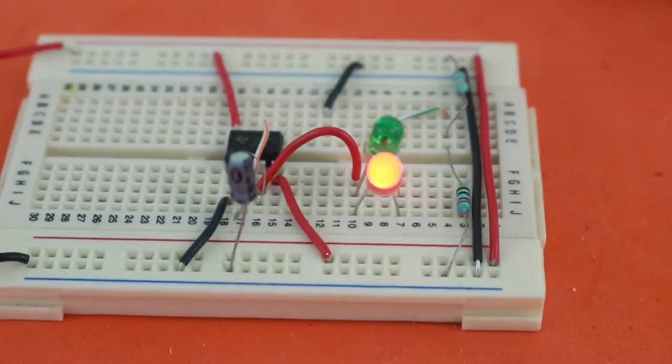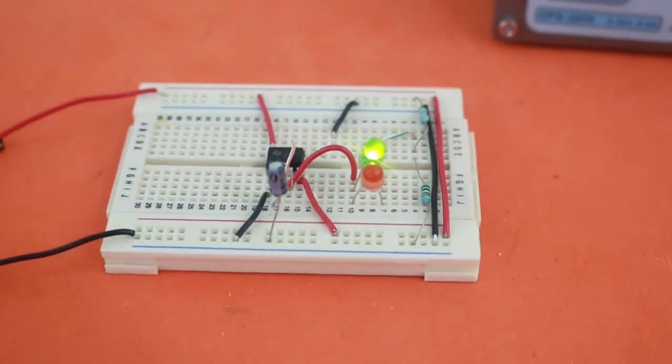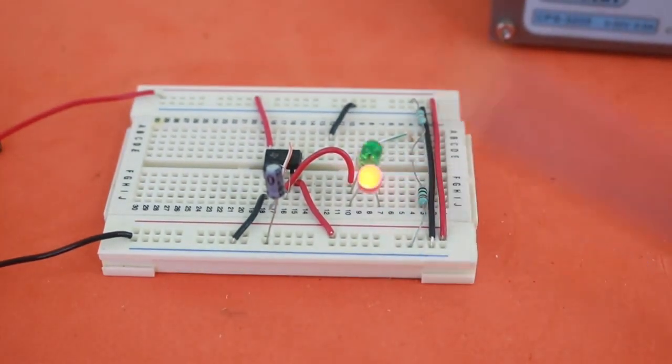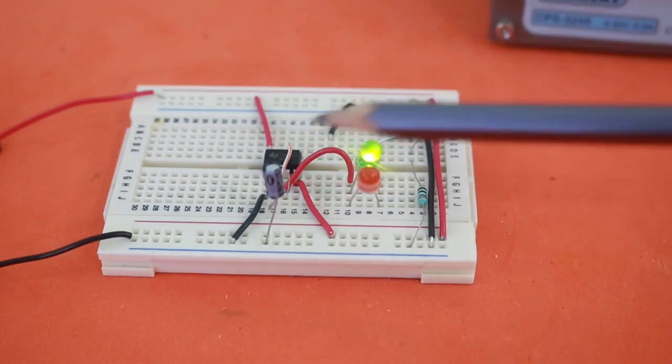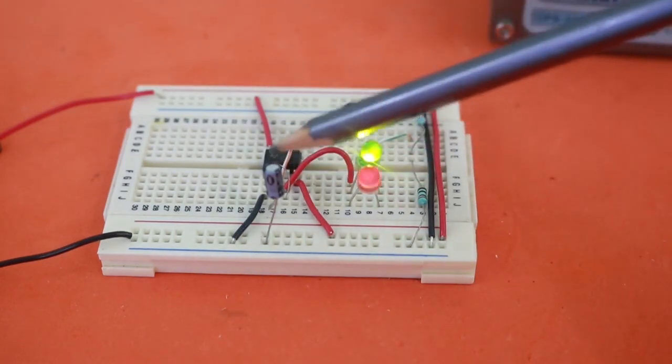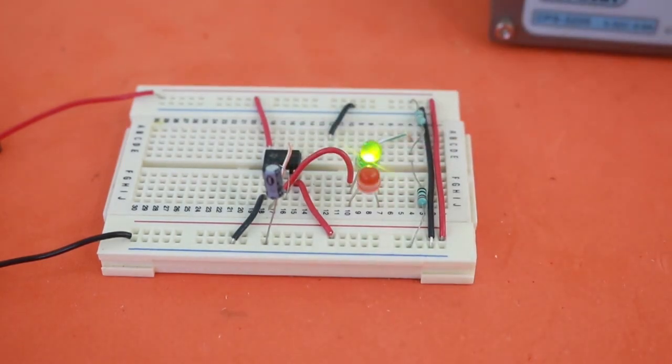As I mentioned before, if you want a different rate of oscillation, you can change the value of the capacitor and or the value of the resistor.